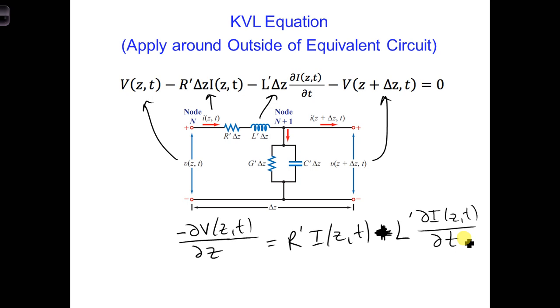We can say how the voltage changes in space at a particular moment in time along the transmission line depends on the coefficients R and L, which depend on the transmission line geometry and the materials you're using. And it also depends on the current at that moment and at that position in space and how the current is changing in time at that same moment, at that same position in space.